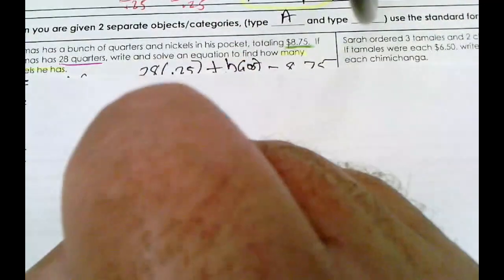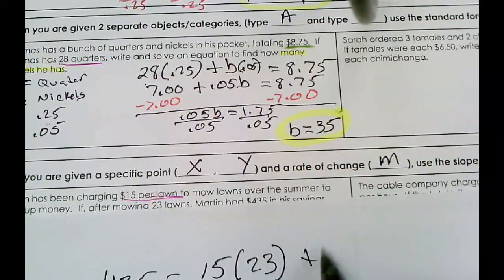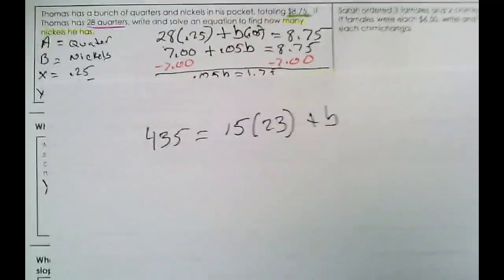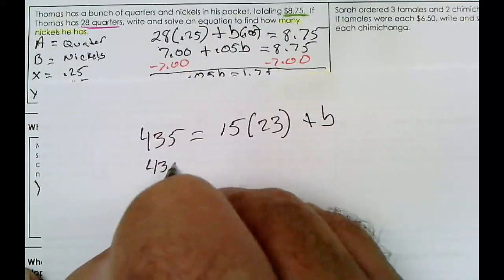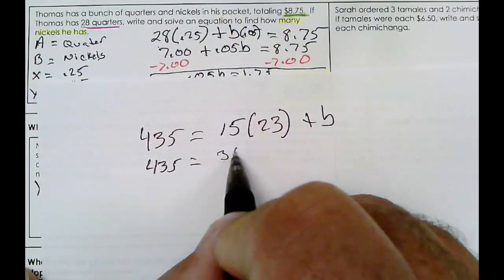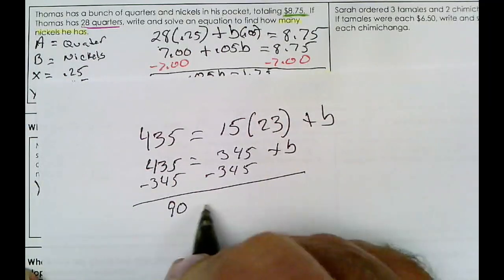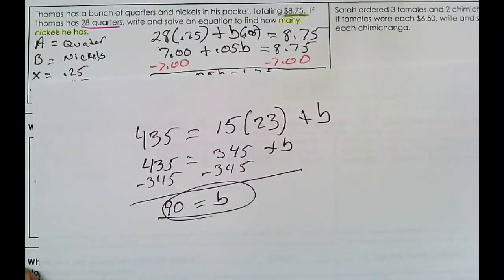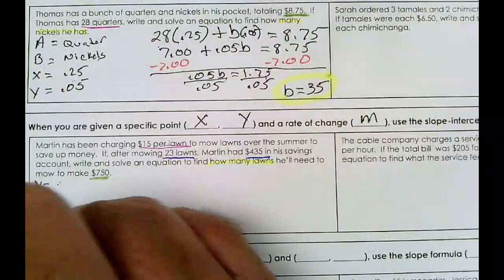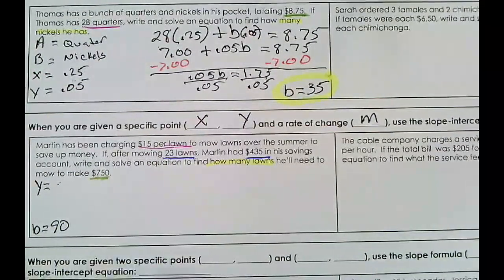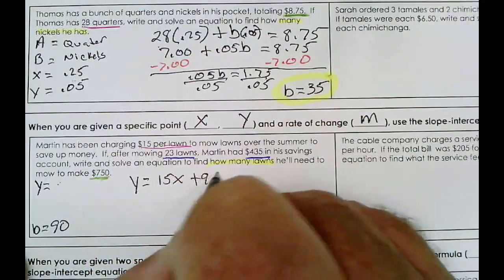$435 is equal to — simplifying — $345 plus b. Subtract $345, and you're left with $90. So we know that he started with $90 in his savings account. At $15 a lawn, 23 lawns didn't equal $435 alone, so our b is $90. Now we can write our equation: y is equal to 15x plus 90.